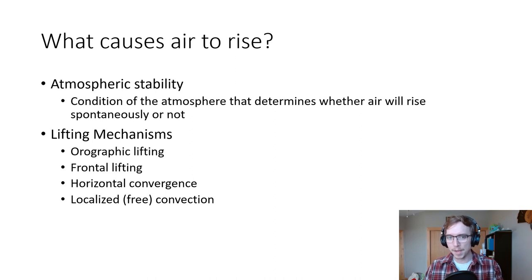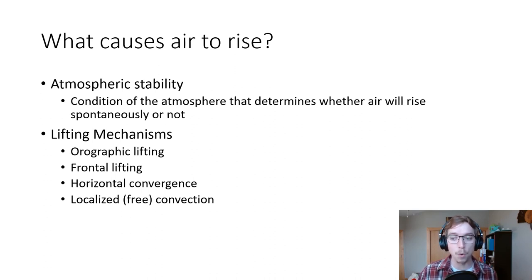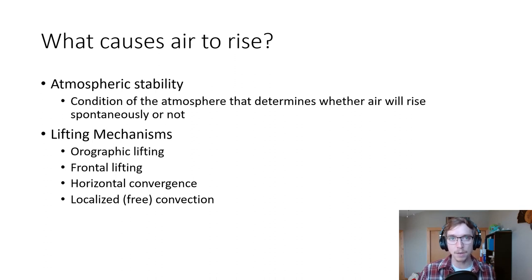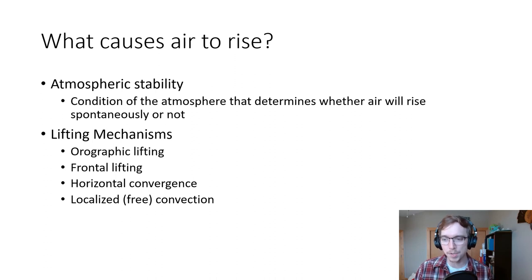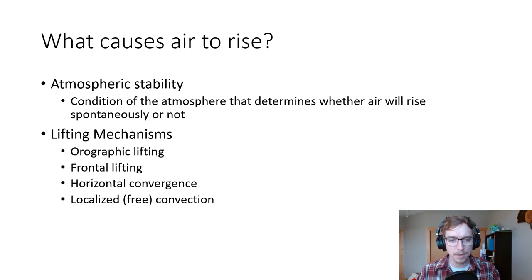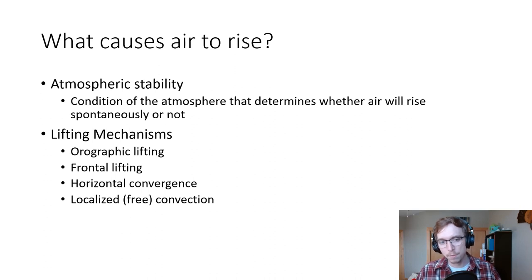This is the recap slide from our last lecture. Atmospheric stability is a condition of the atmosphere that determines whether air will rise spontaneously or not. Lifting mechanisms that can aid in the rising of air include orographic lifting, frontal lifting, horizontal convergence, and localized or free convection. Orographic lifting is where a topographic barrier forces air to rise over mountains or hills. Frontal lifting is where a warm air mass moves over a cold air mass — a warm front or cold front pushing through and forcing warm air up.